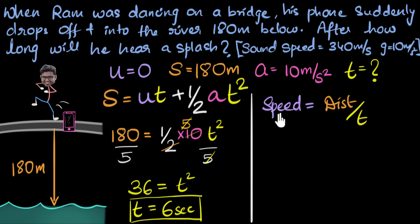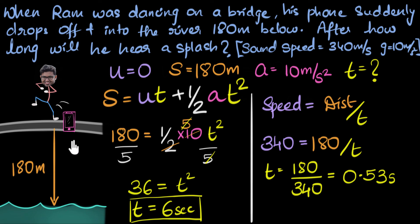Since it's traveling with a constant speed, we can always use the formula speed equals distance by time. This works for anything that travels with constant speed. So for sound, speed equals distance divided by time. We know the speed of sound is 340. That's equal to distance - the sound has to travel the same distance, 180, divided by t. And so if you do the algebra, t turns out to be 180 divided by 340, which is roughly 0.53 seconds.